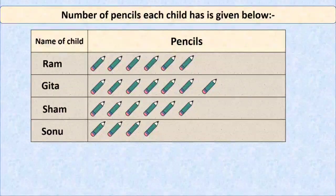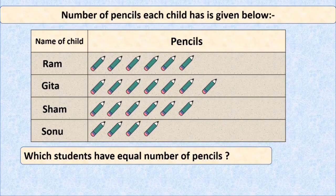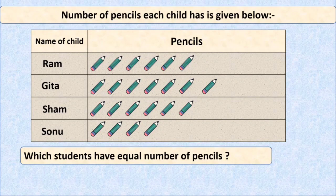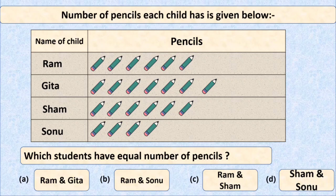Moving to our next question: the number of pencils each child has is given below. Which students have an equal number of pencils? In the left column we can see the names of some students, and on the right side the number of pencils each has. The four options are: option A is Ram and Geeta, option B is Ram and Sonu, option C is Ram and Shyam, and option D is Shyam and Sonu.